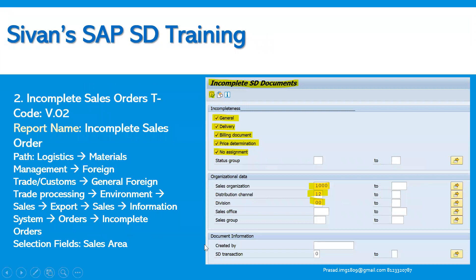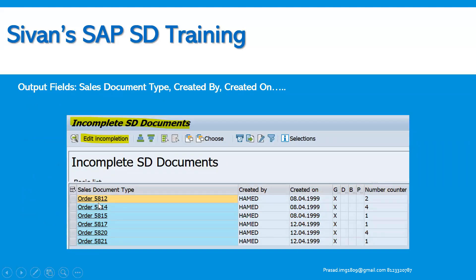Another important report is Incomplete Sales Orders. An order may be incomplete because of inco terms, shipping point not maintained, or customer group fields made mandatory. When you execute transaction code V.02 with respect to your sales area, you can choose whether it is general, delivery-related, billing document-related, or price determination-related information. All incomplete SD documents will be displayed on screen, and you can reprocess or modify them by double-clicking the sales document and using the edit in completion log option, then saving it.